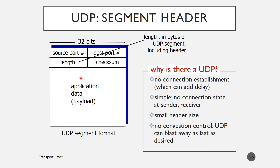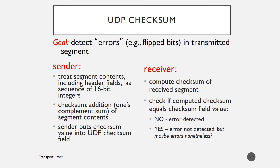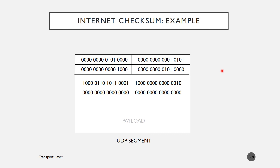The actual byte data will also be described. The checksum is called error detection. Let's see how the checksum error detection process works. The data is called ones complement and the bit is called a change in the checksum field.